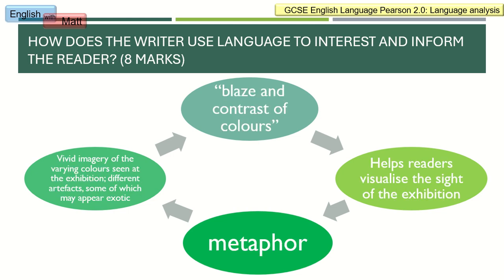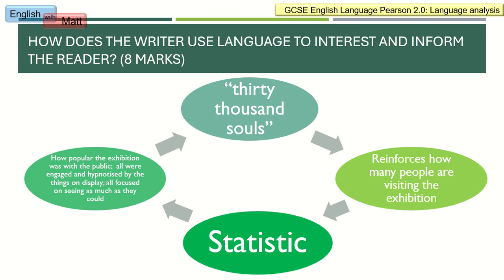The second example is the metaphor where she talks about 'a blaze and contrast of colours.' A blaze refers to a fire, and flames can be very colourful — deep oranges and reds, sometimes blues and greens — so it helps readers visualise what she can see. She is aware the reader is not there, so she uses language to recreate this vivid, colourful location. She's saying it's quite vibrant because of all the different artifacts, many of which might be exotic and from abroad — she is overwhelmed and struck by how colourful and appealing the exhibition is.